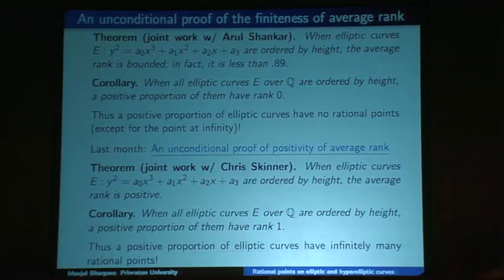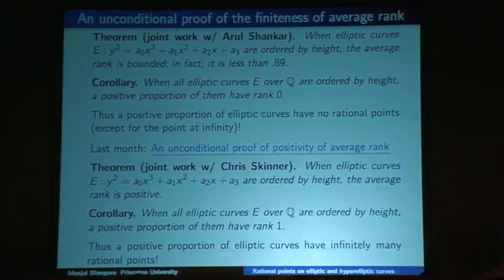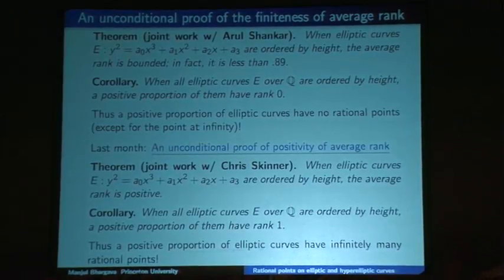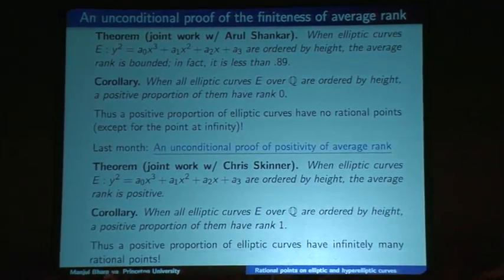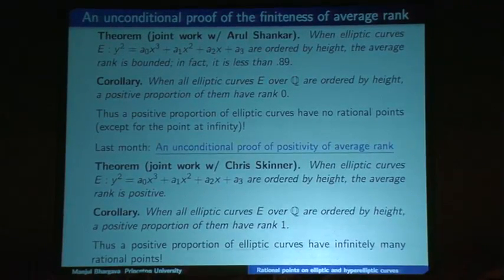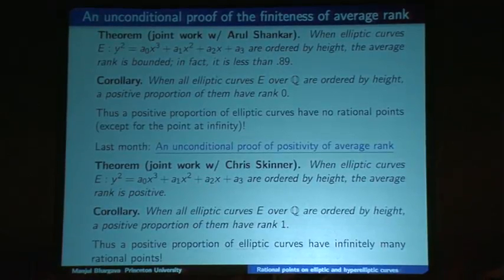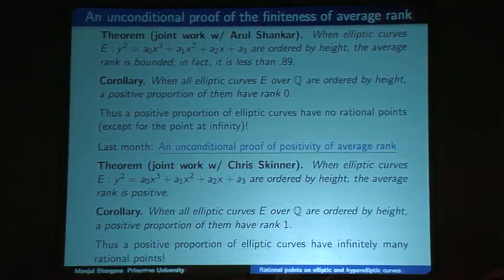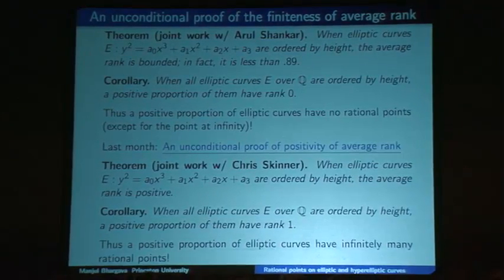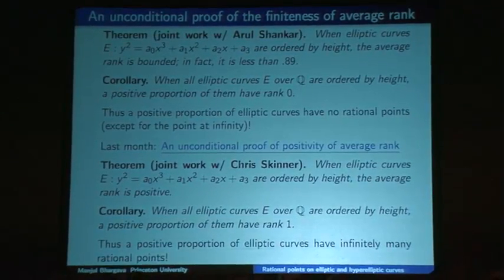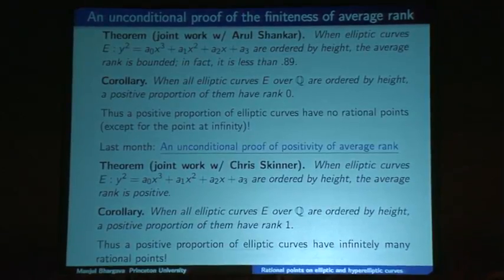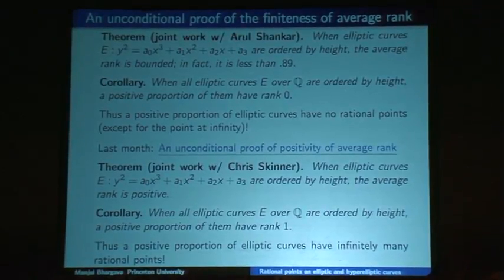Those are the complementary results I wanted to tell you about in the elliptic curve case. I should mention that m = 3 and m = 4 both correspond to the genus-1 case where the graph is the surface of a donut. The same results also apply for m = 4: if you look at y² = quartic in x, a positive proportion will have no rational points, and a positive proportion will have infinitely many rational points.